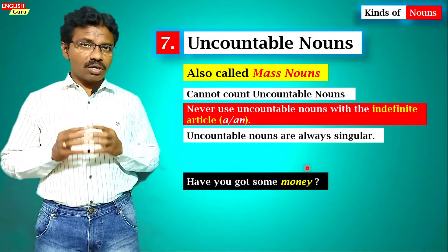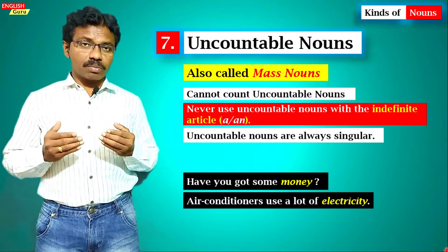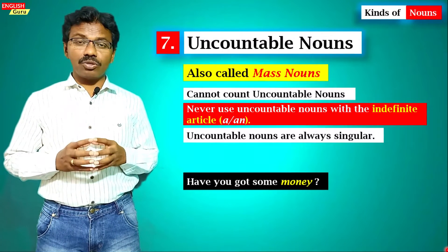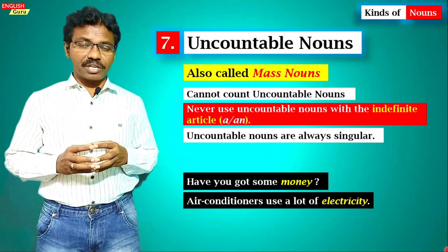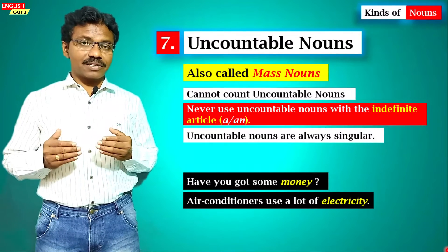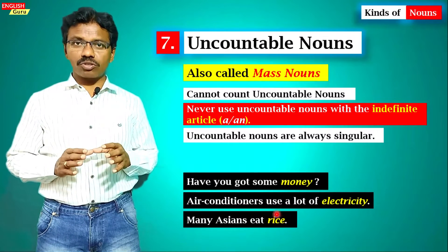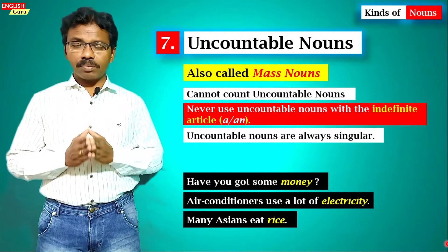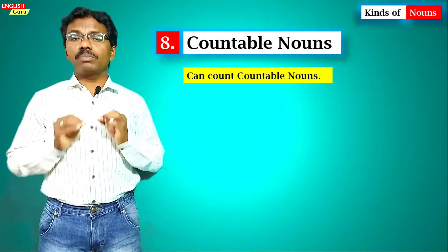'Have you got some money?' — 'money' is singular; there is no 'monies.' You also cannot say 'a money' or 'an money' — you cannot use the indefinite article before money. 'Air conditioners use a lot of electricity' — 'electricity' is an uncountable noun. 'Many Asians eat rice' — 'rice' is also an uncountable noun. Uncountable nouns cannot be counted and have only singular forms.